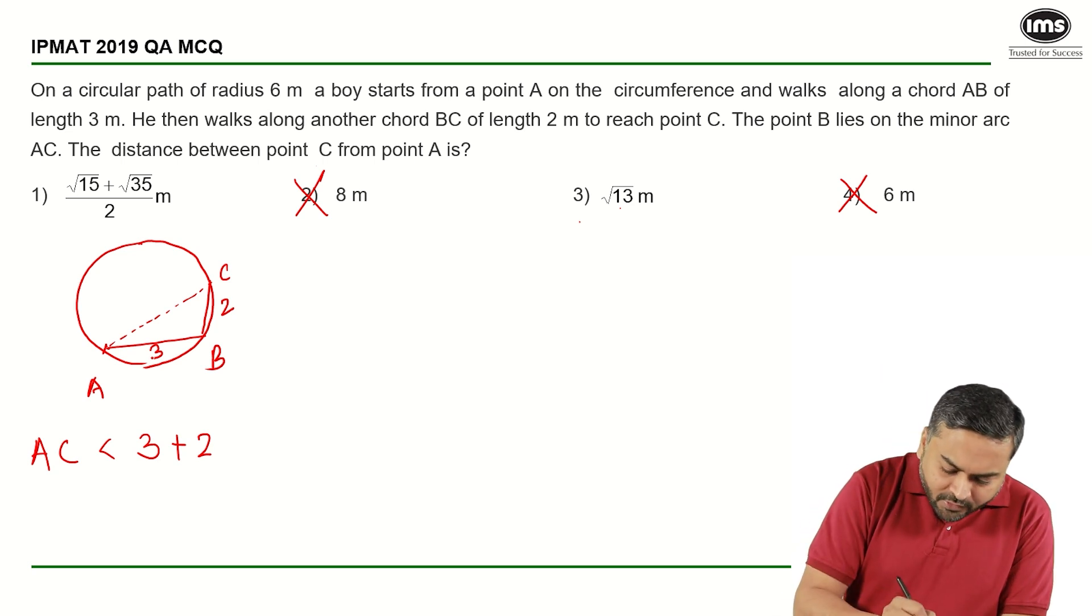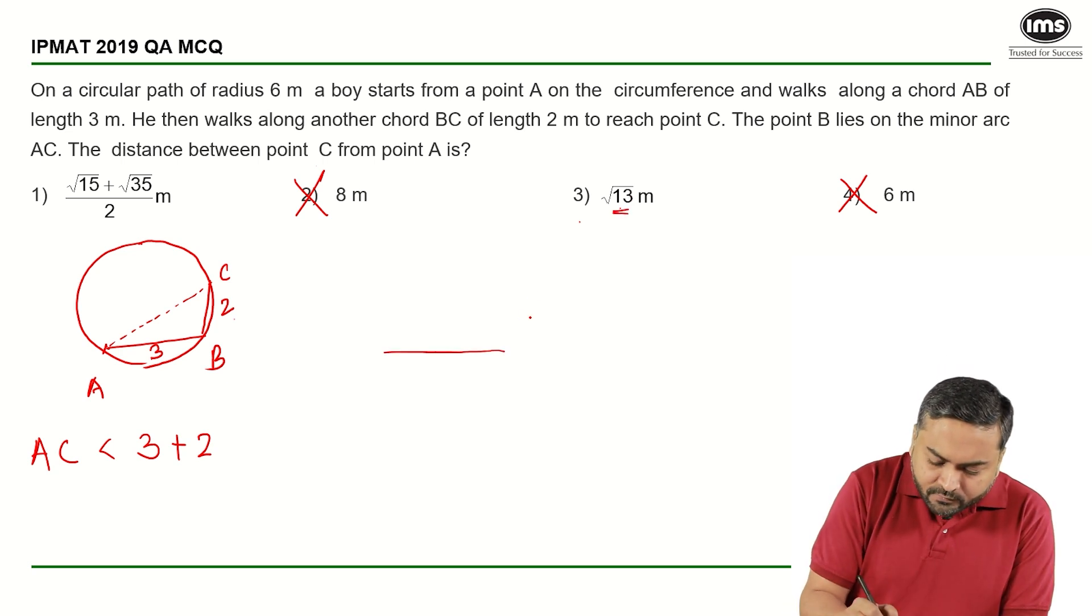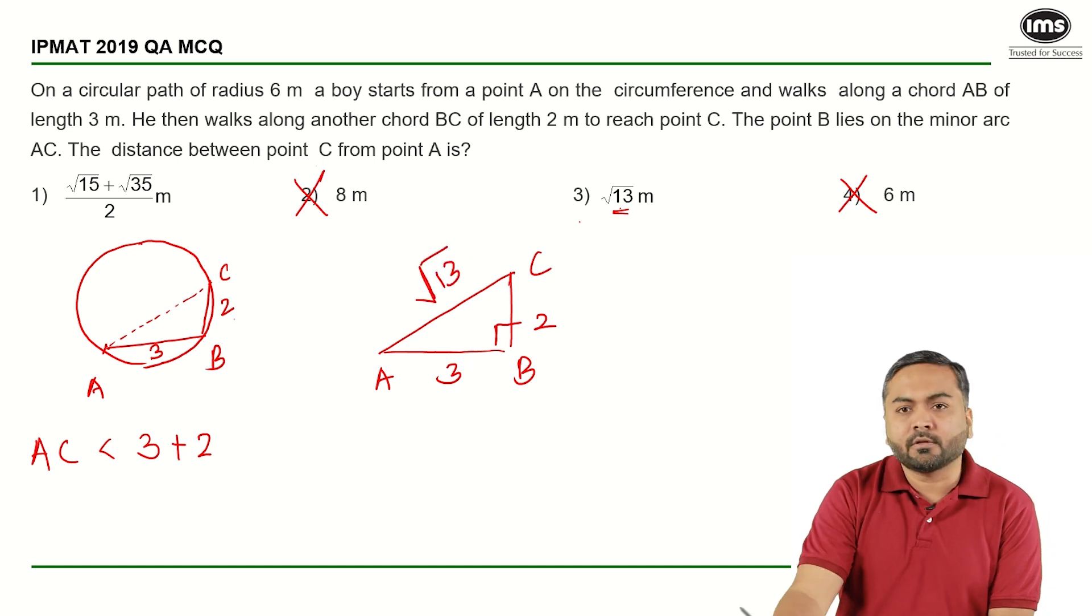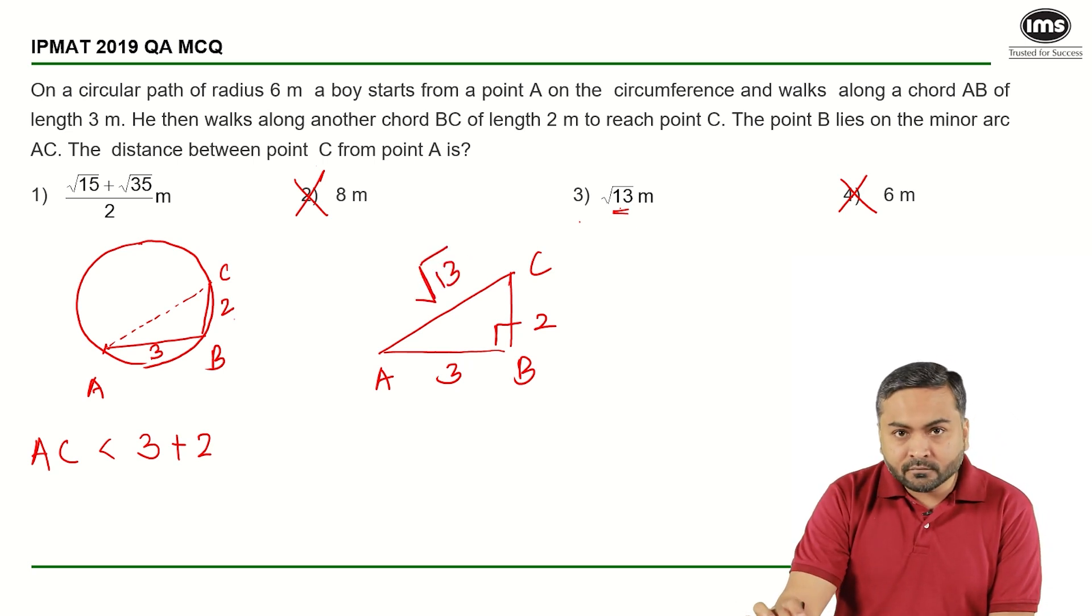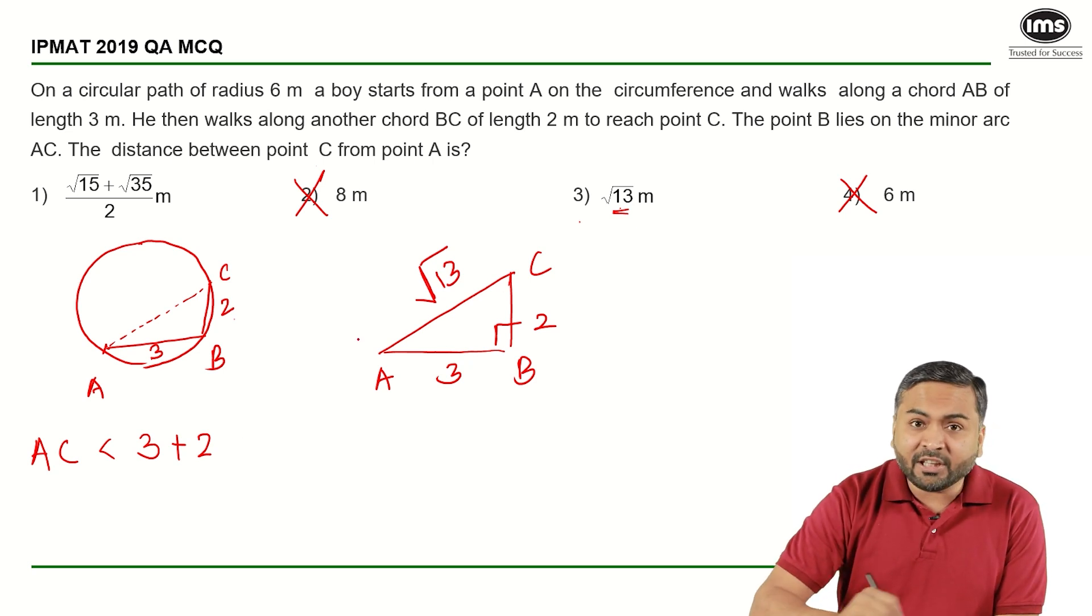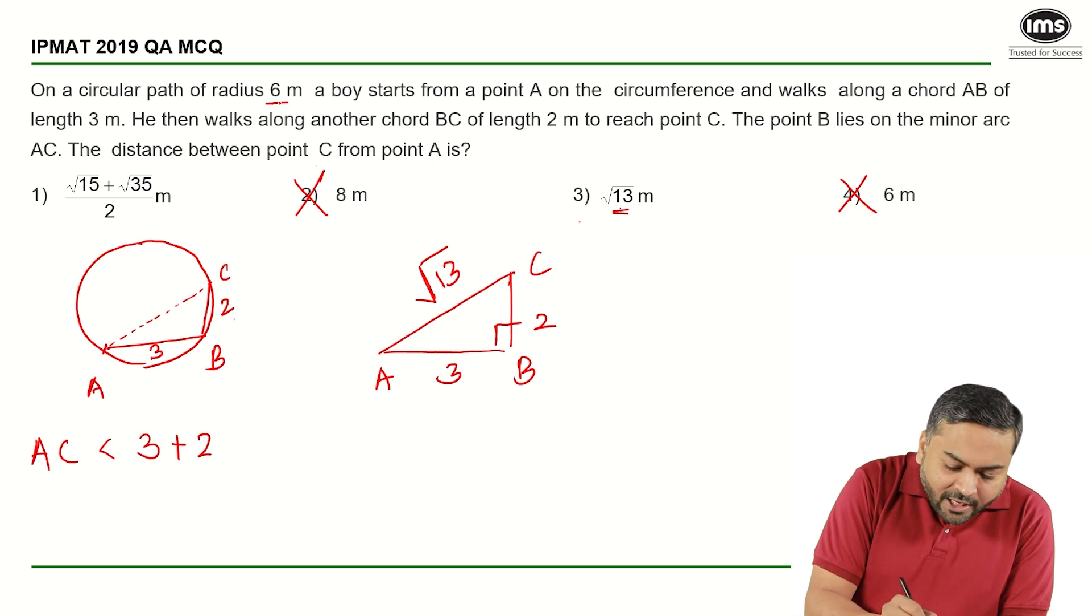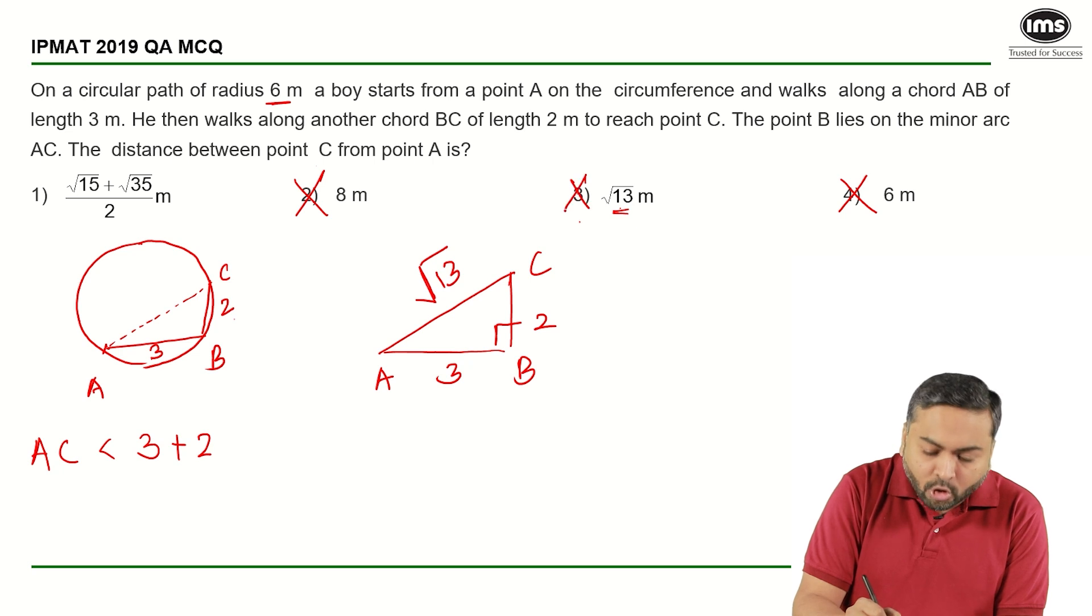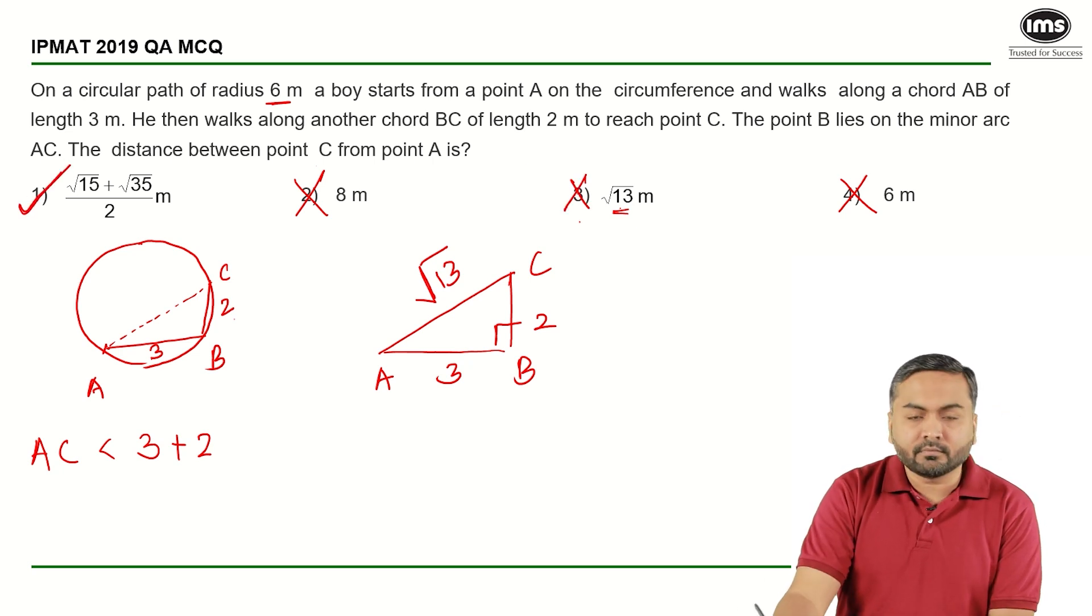Now what I can see here is that this is 3, this is 2. I can get root 13 only and only if ABC is a right angle triangle. This is 3, this is 2, this is right angle, only then I can have root 13 as hypotenuse. But if at B the angle is 90 degrees, in that case AC becomes a diameter. But diameter in our case should be equal to double the radius, that's 12. So it cannot be root 13, that's a contradiction, and hence that's not the answer. The answer option is first option.